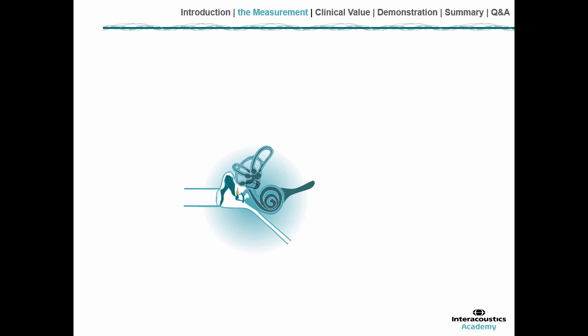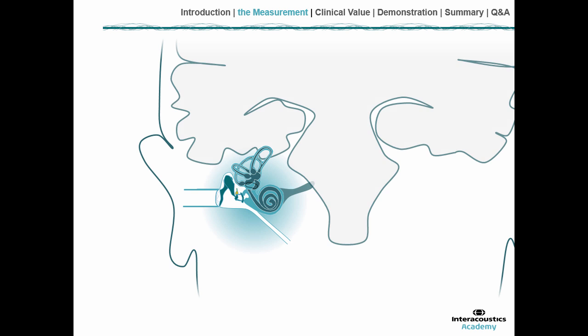Let's see how this is embedded in our head. Here we see the ear on the outside, and the cochlea gets connected to our brain. Of course we have two ears, so I will also show the other side.